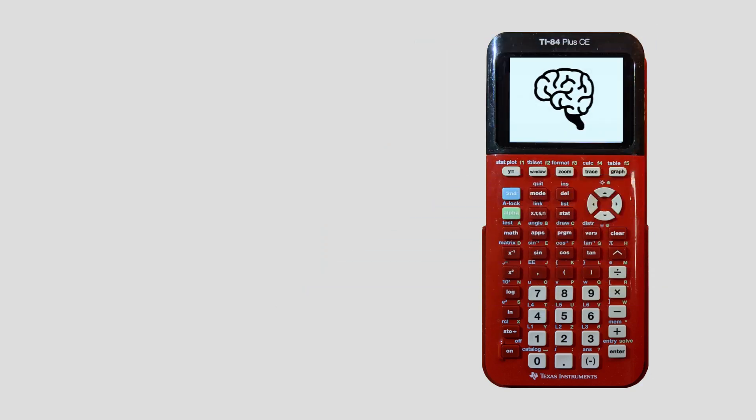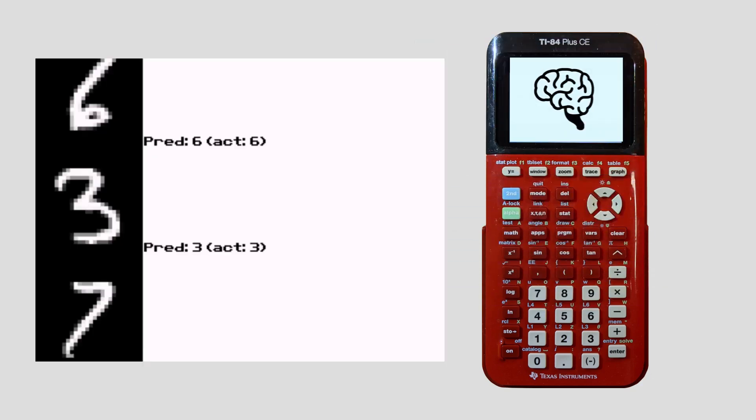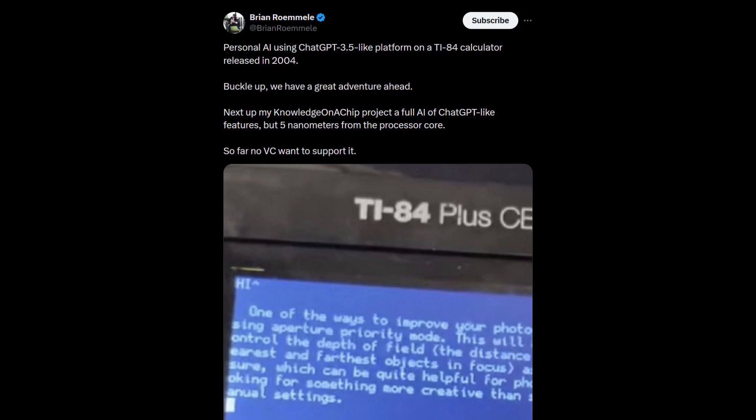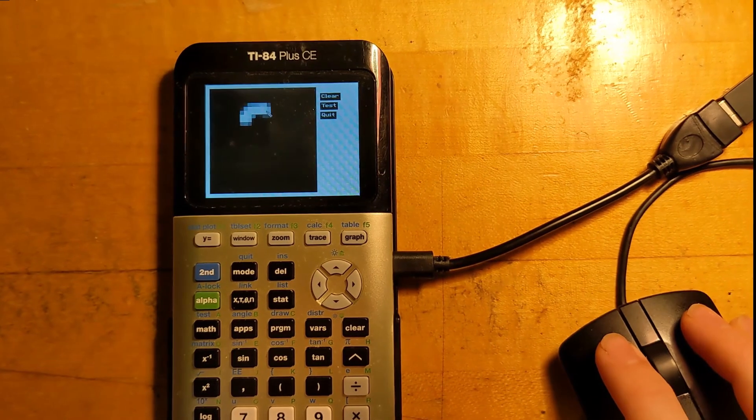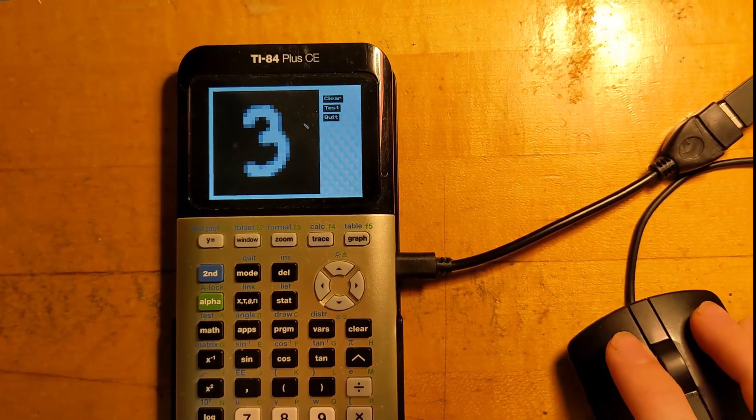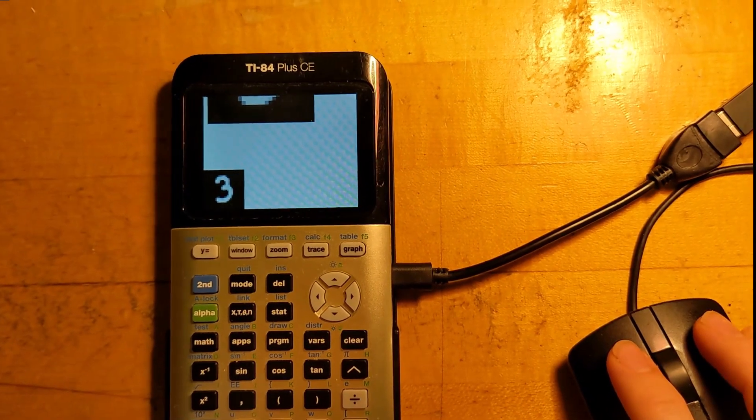I made a graphing calculator recognize handwriting with machine learning. A less than honest entrepreneur or two has claimed to show off AI running on a calculator, but in this project I'll show you a convolutional neural network really running on a calculator to really recognize handwritten digits.